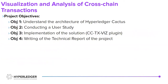The first objective was understanding the architecture of Hyperledger Cactus, which took some time because it was quite complex. The second objective was conducting a user study in order to develop a better understanding of what metrics and pieces of information are the most relevant for end users when performing blockchain transactions.